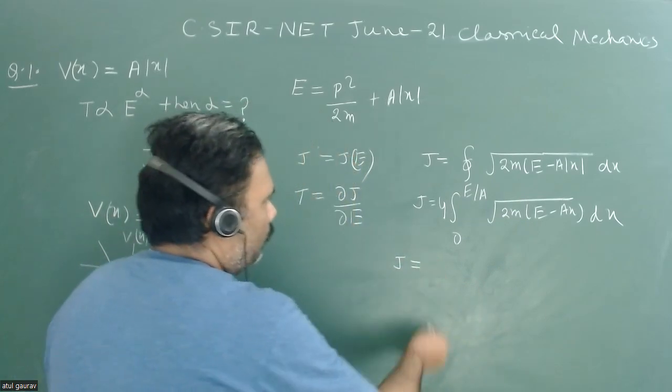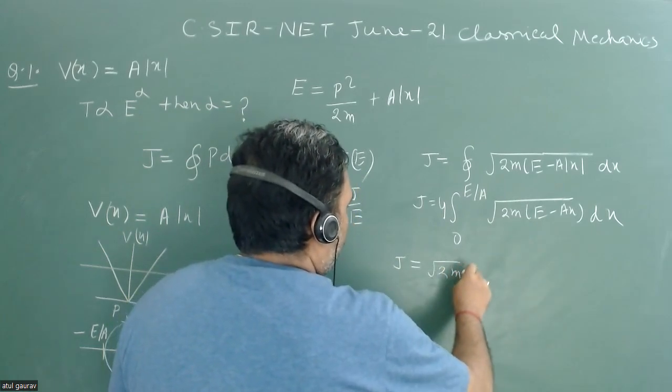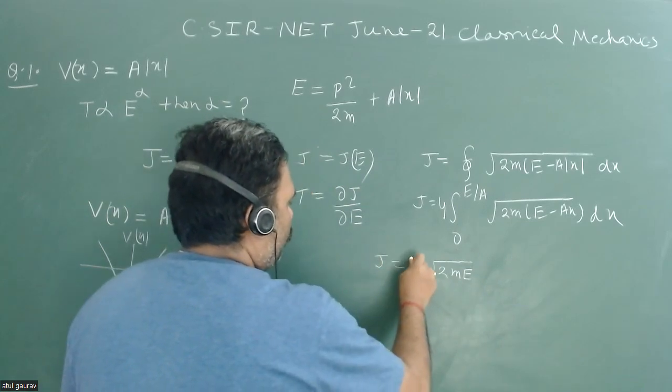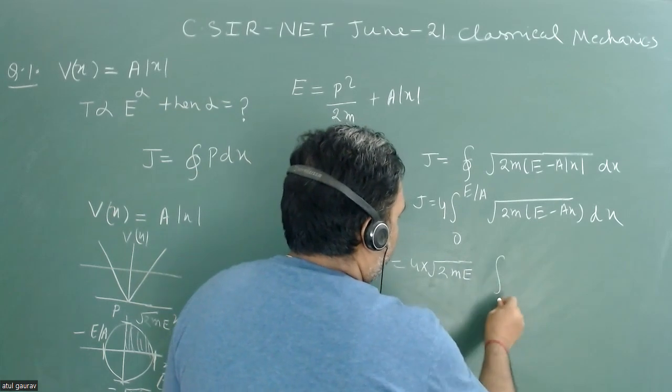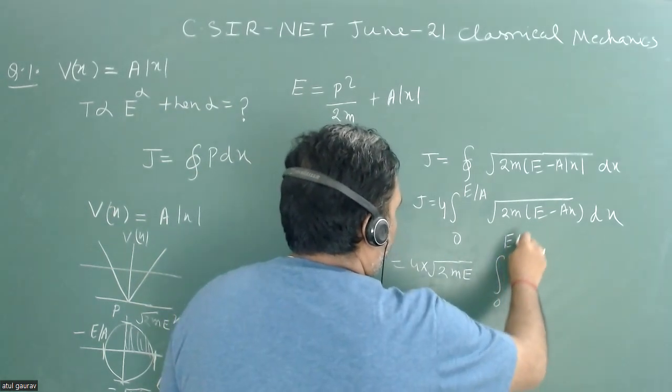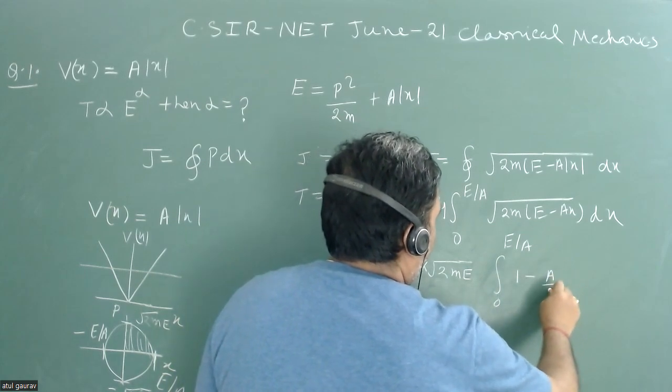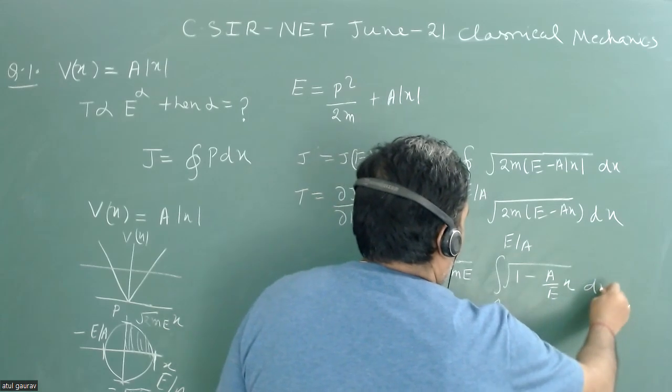So we have J equals, we will take root under 2mE common, and this J is equal to 4 into root under 2mE common. So this integration is 0 to E by a, and this value is 1 minus a by E into x root under dx.